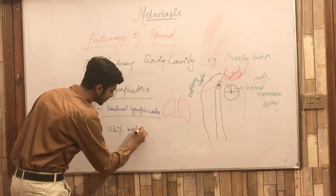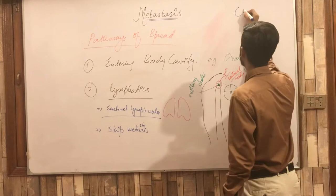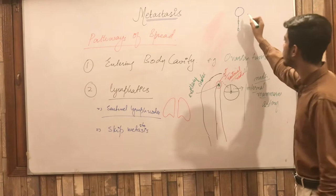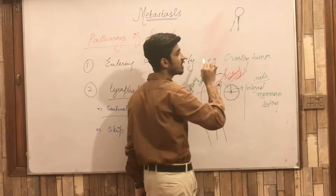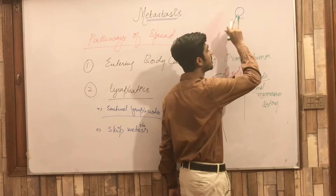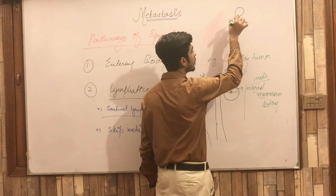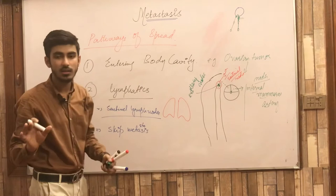The second terminology is skip metastasis. Normally, a primary tumour spreads through lymphatic channels to the nearest lymph nodes. But due to some reason — for example, the tumour obstructing those lymphatic channels, or an anastomosis between lymphatic channels and veins, or due to inflammation — the tumour instead drains to a different, more distant lymph node, skipping the expected ones. This is called skip metastasis.